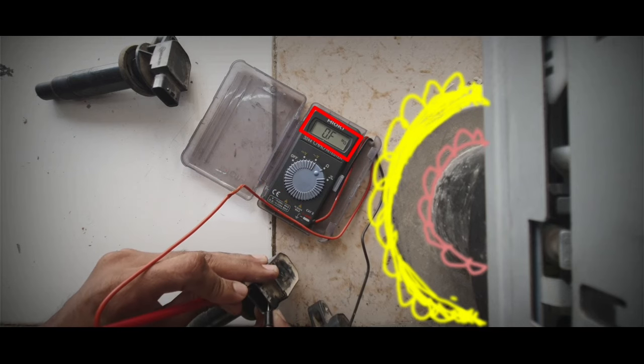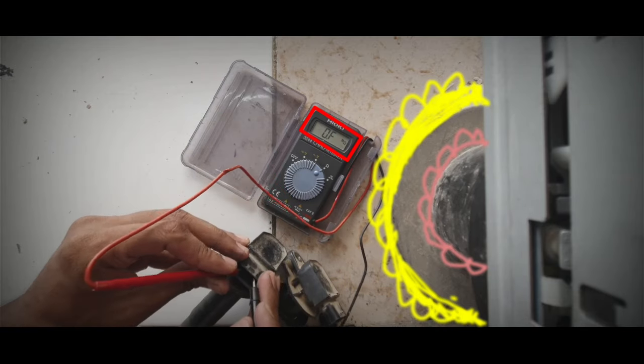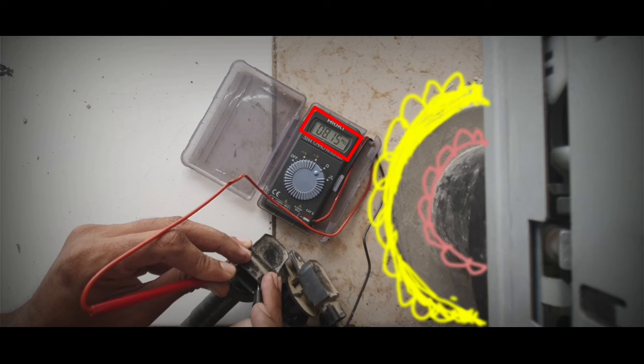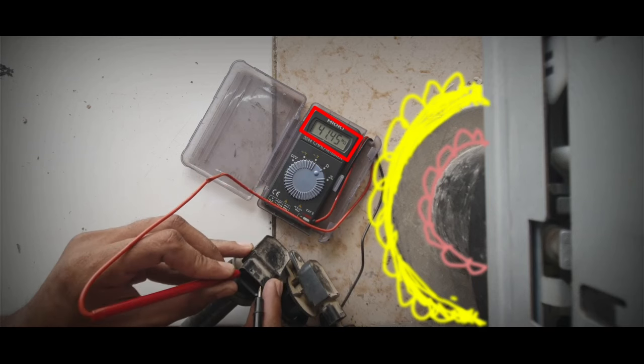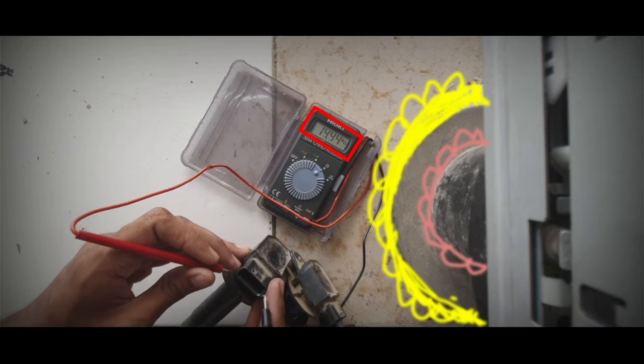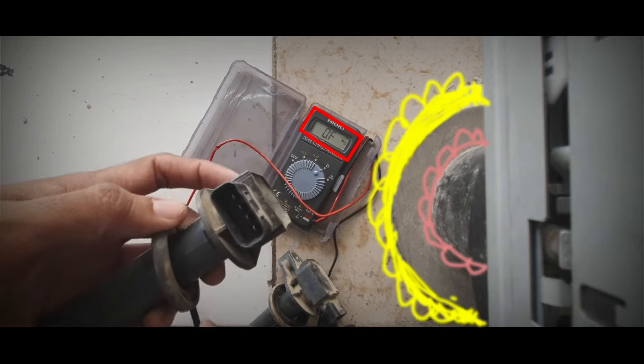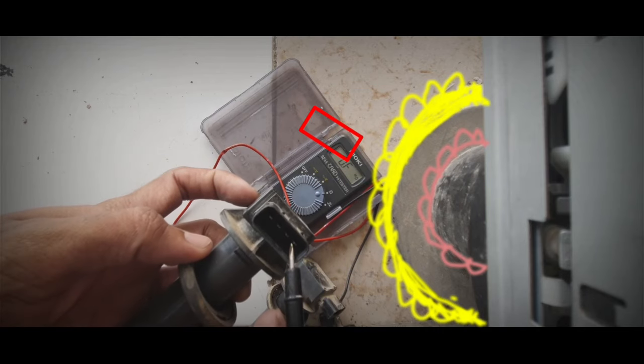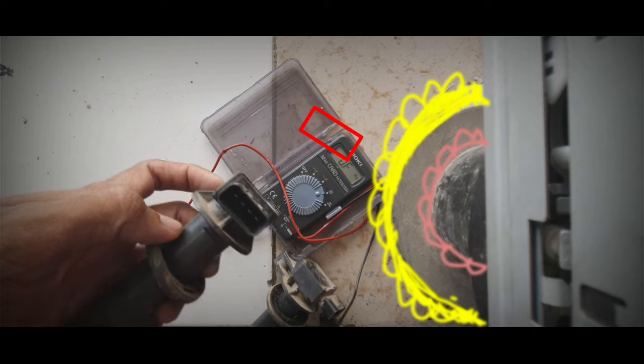Fourth one, 08.12. That means this coil is damaged. 08.12. Three of them 26, but the last one 08 point like this. That means this ignition coil is damaged and I need to replace the ignition coil.